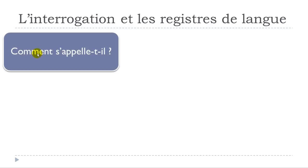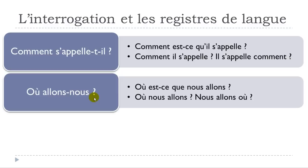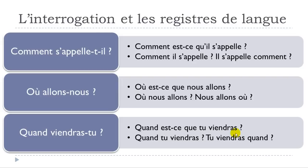COMMENT S'APPELLE-T-IL? — what is his name — that's the correct formal way. Less formal: COMMENT EST-CE QU'IL S'APPELLE? Spoken: COMMENT IL S'APPELLE? or IL S'APPELLE COMMENT? Then OÙ ALLONS-NOUS? — OÙ EST-CE QUE NOUS ALLONS? — OÙ NOUS ALLONS? — NOUS ALLONS OÙ? Then QUAND VIENDRAS-TU? — QUAND EST-CE QUE TU VIENDRAS? — QUAND TU VIENDRAS? — TU VIENDRAS QUAND?